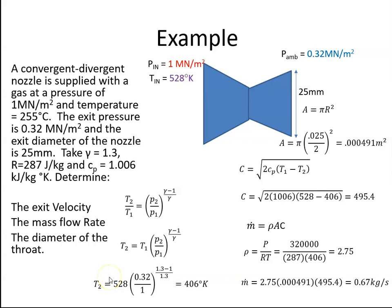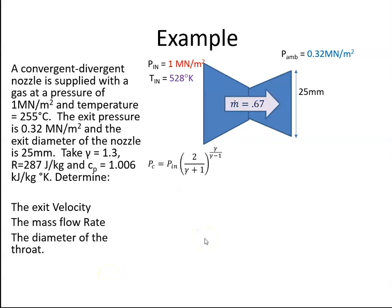To do this then, we're going to need to calculate the critical pressure. So we use our critical pressure formula, and we're going to put the values in, and we get the critical pressure to be 545 kilonewtons per meter squared, or 0.545 meganewtons, which is greater than the ambient pressure, so we know it is choked. We probably knew that anyway because it was a convergent-divergent nozzle.